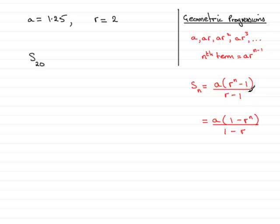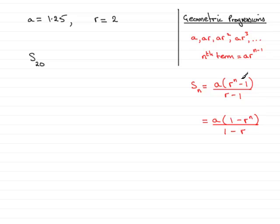Either of these two formulas are fine. I'm going to use the first one in this question because the common ratio r, which is 2, is more than 1, and it just means that the top and the bottom come out as positive answers. If you use the other version, the top comes out as negative, the bottom comes out as negative — it still leads to the same answer, but I prefer to keep the solution as simple as possible.